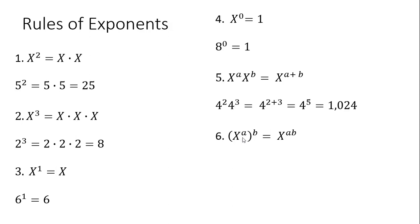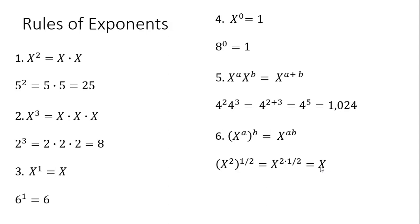Rule 6: x raised to the power of a, and then that's all being raised to the power of b — here we will multiply the exponents. This simplifies down to x raised to a times b. For example, x squared with the square root of that: just multiply the two exponents together. 2 times 1 half is 1, or just x. Another example: multiplying those exponents gives x raised to the 0.5 power.